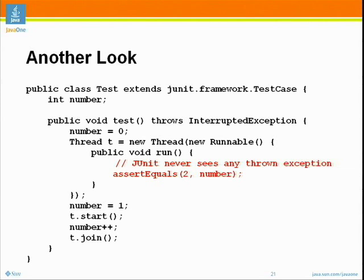The JUnit test harness will see that the test method returns normally and will report a little green dot saying that your test method passed every single time. So you're saying that the test method will always succeed whether or not the assertion passes or fails — the test method will always succeed.